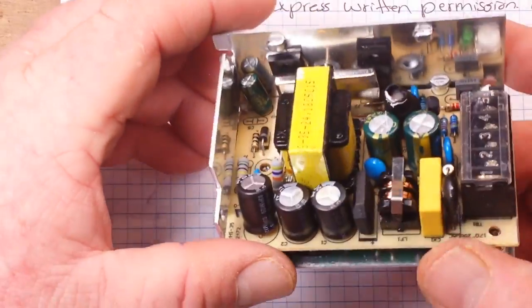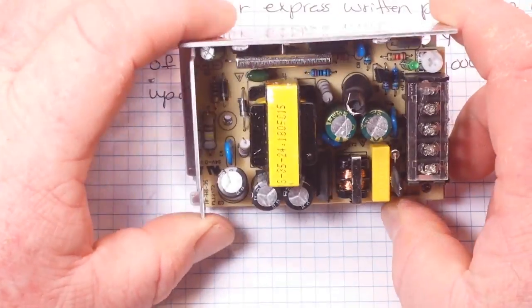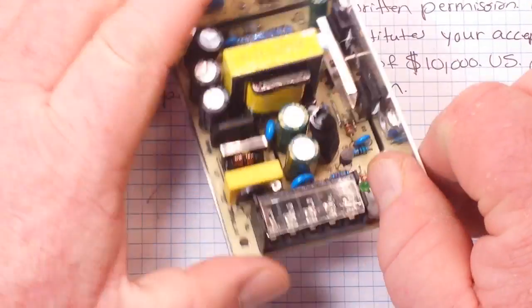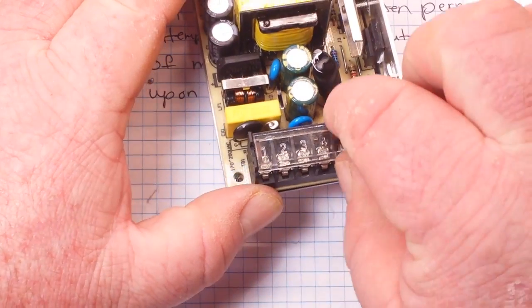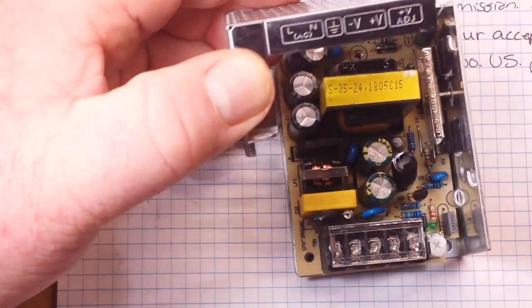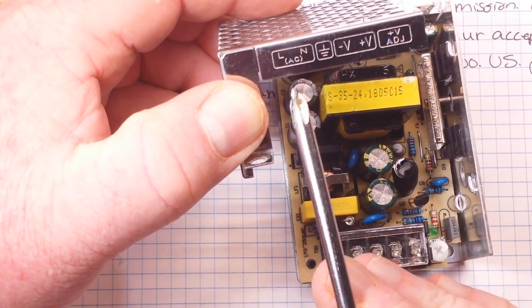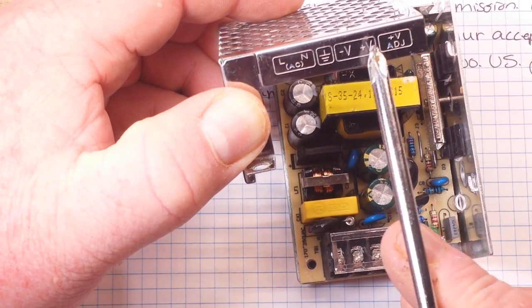Well, I'm not going to take it apart any further. Okay, so we've got our input side here with screw terminals labeled one two three four five and they match up here on the lid: live, neutral, ground, V minus, V plus.